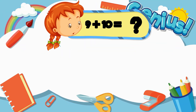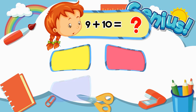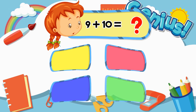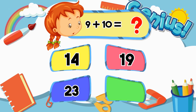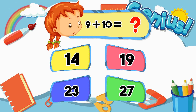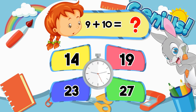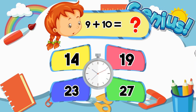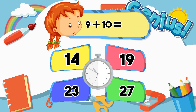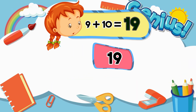What is 9 plus 10? Options: 14, 19, 23, 27. Answer: 19.